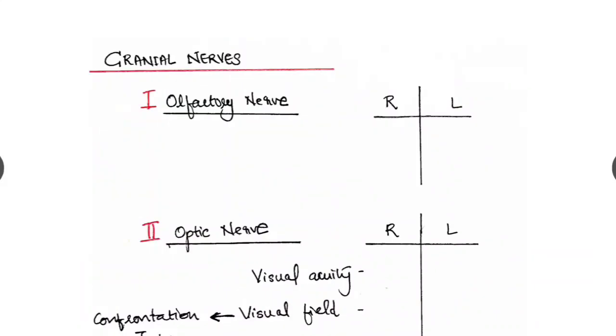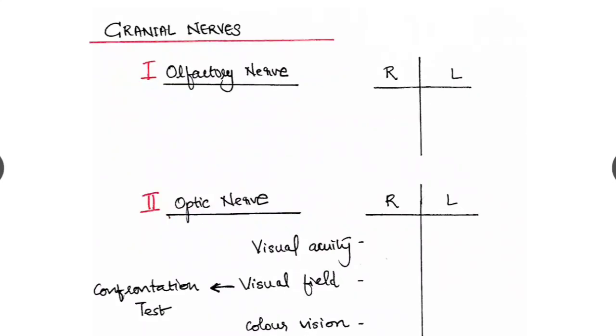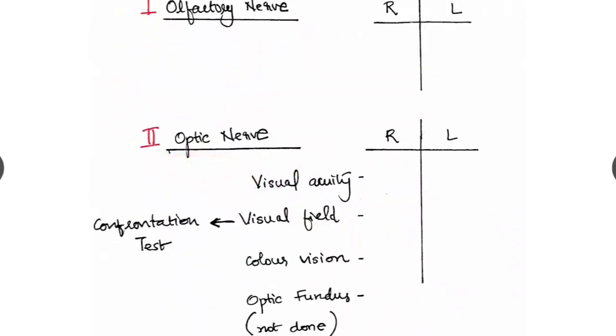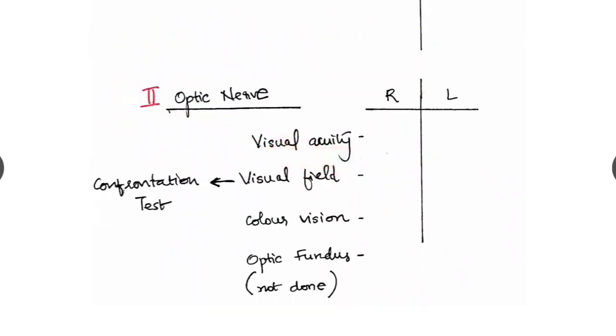Next is examination of the cranial nerves. First check for the olfactory nerve which is the first cranial nerve. Tabulate it as right and left. And check for the smell. Second is the optic nerve. Check for the visual acuity, visual field with confrontation test, color vision and optic fundus is there but we don't check optic fundus nowadays.